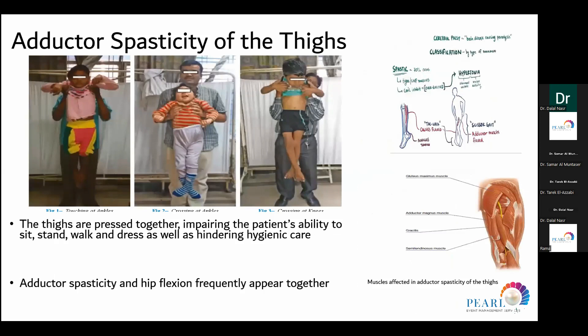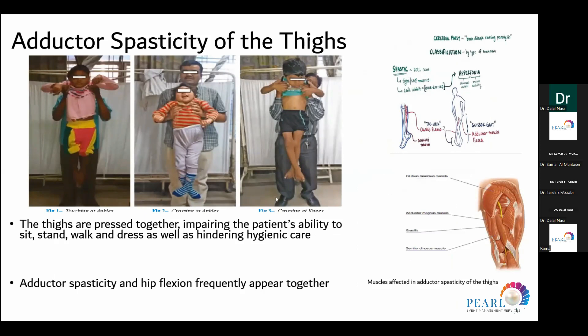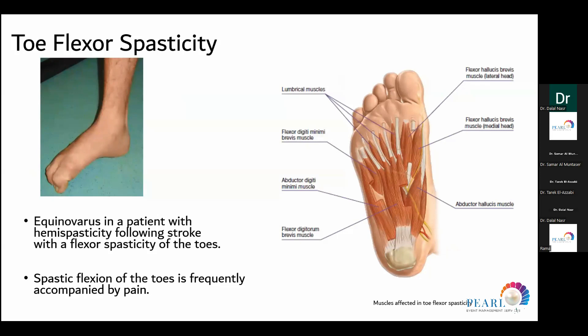Adductor spasticity of the thighs produces the common scissoring sign, with varying degrees of severity. This can affect standing, walking, and even diaper changing and hygiene in the genital area. Toe flexor spasticity is seen mainly following stroke and affects posturing, standing, and the ability to walk.